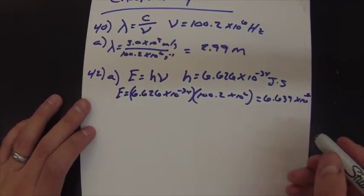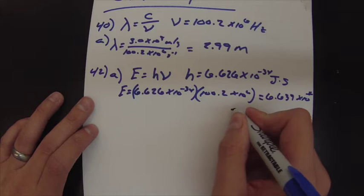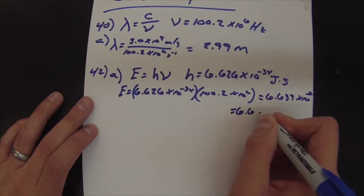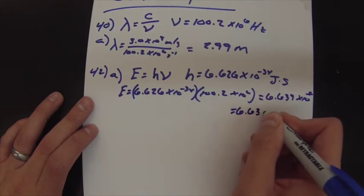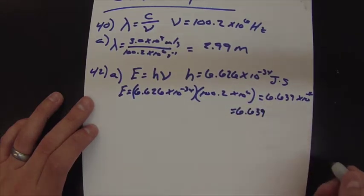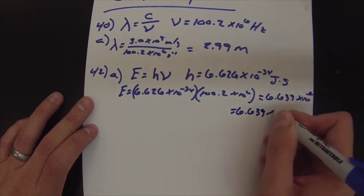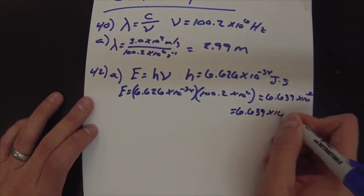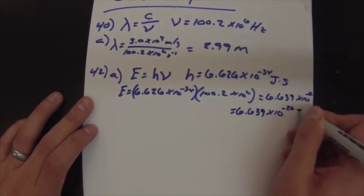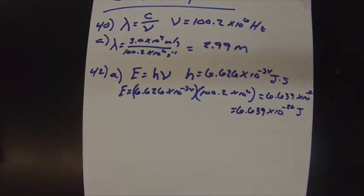When you do all that math out you get 6.639 times 10 to the negative 26 joules.